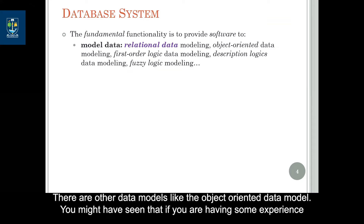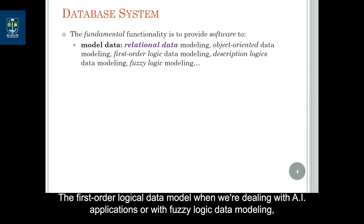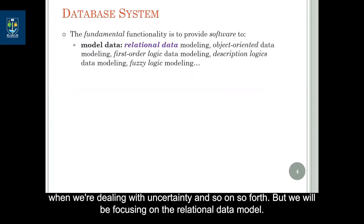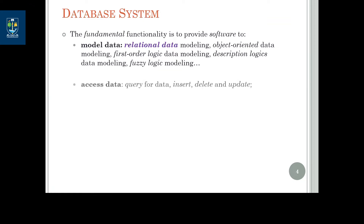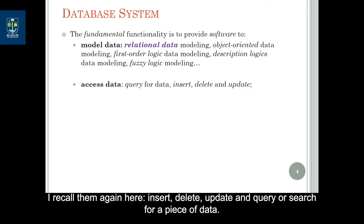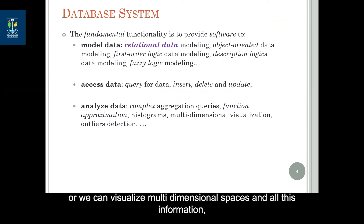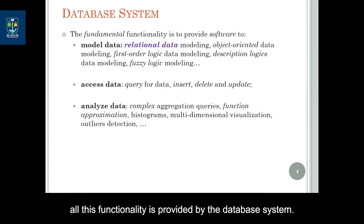There are other data models like the object-oriented data model, which you may have seen if you have experience programming in Java or Python. There are first-order logic data models when dealing with AI applications, or fuzzy logic data modeling when dealing with uncertainty, and so on. But we will be focusing on the relational data model. We are also provided access to data and specifically the three fundamental operations: insert, delete, update, and query or search. Additionally, we are provided the functionality of analyzing data — for instance, building histograms of specific features or visualizing multi-dimensional spaces.